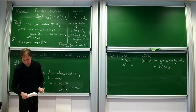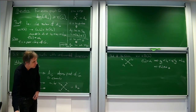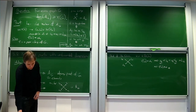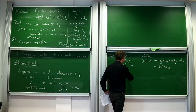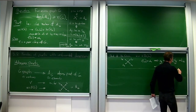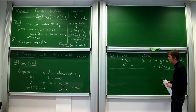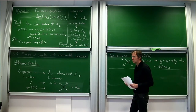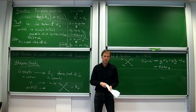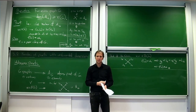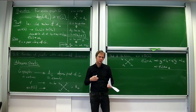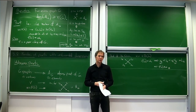So φ is a proper coloring using D colors, where D was the size of the realizer we started with. This indeed proves the inequality that dim(AG) ≥ χ(G).